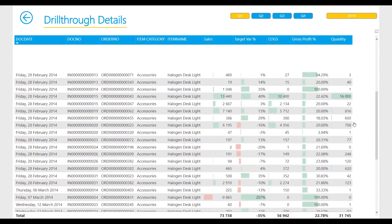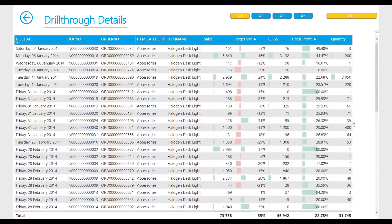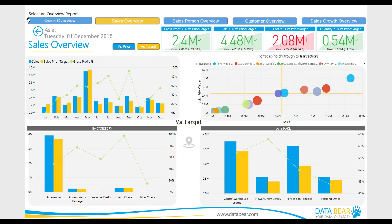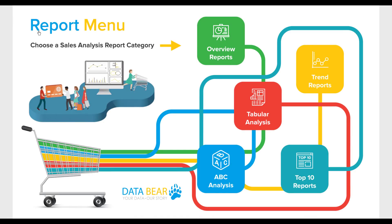Thereafter, you can simply click on the Back button to return to the original report. Each report page has a back button which will return you to the Report menu page, allowing you to select another reporting category for further analysis.